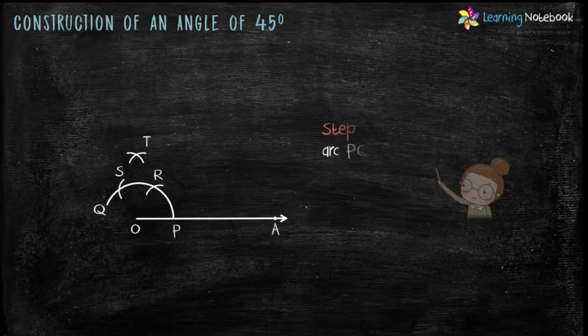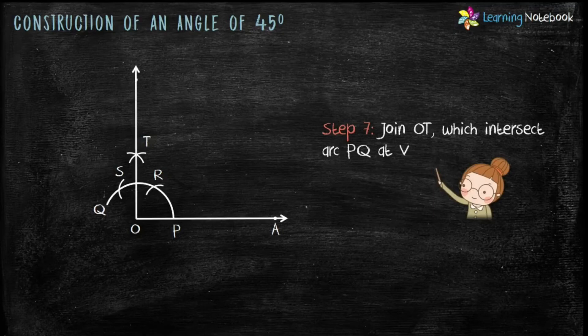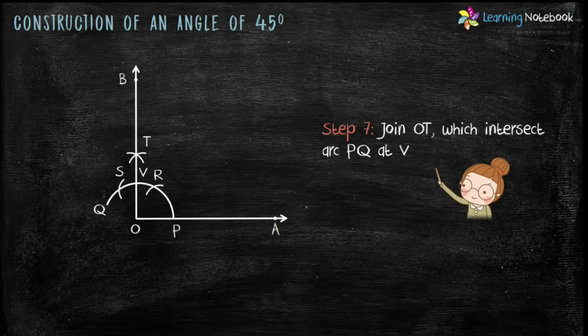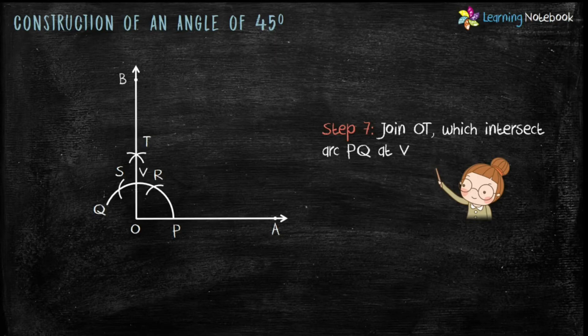Step 7 is, join O, T which intersect arc PQ at point V. Students, we have constructed an angle AOB equals to 90 degree.